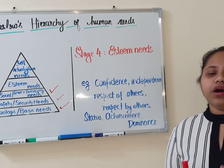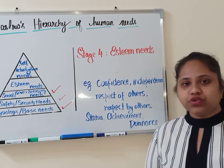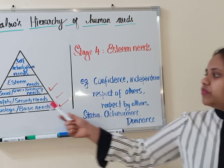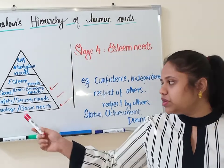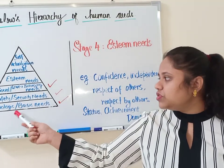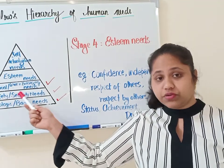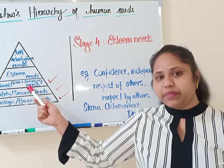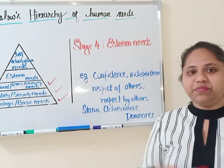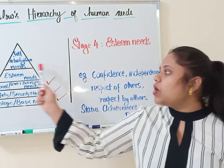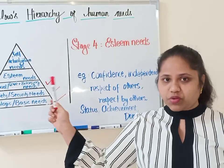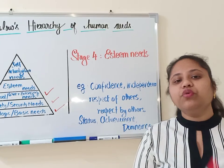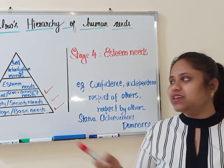So the first four needs from the bottom — physiological or basic needs, safety or security needs, social or love and belonging needs, and esteem needs — are all basic needs. When these basic needs are fulfilled, you move to the more complex need called self-actualization.